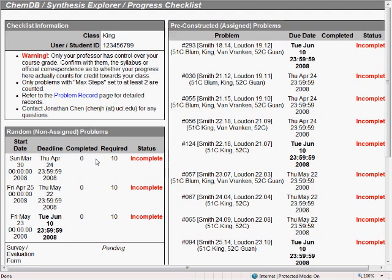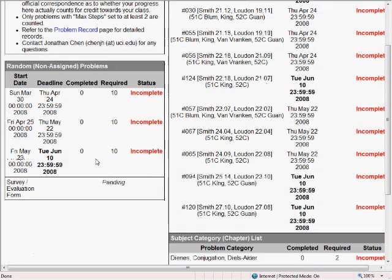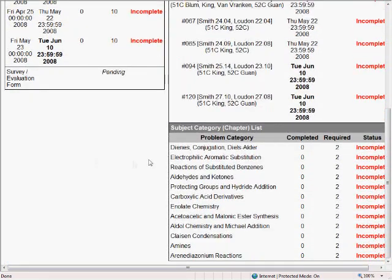Basically, any problem which is not one of the assigned problems will count towards this random problem total. A minor requirement in the bottom right are the different subject categories that you'll be covering in class. This just says that, by the end of the class, you should have tried a couple problems from every chapter.